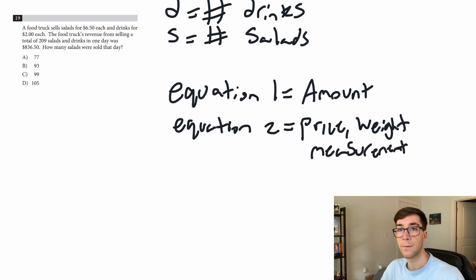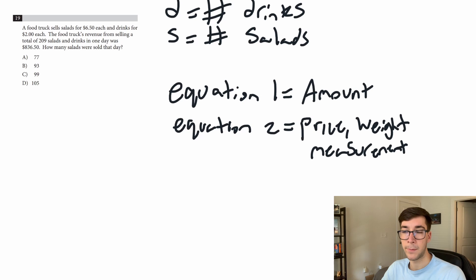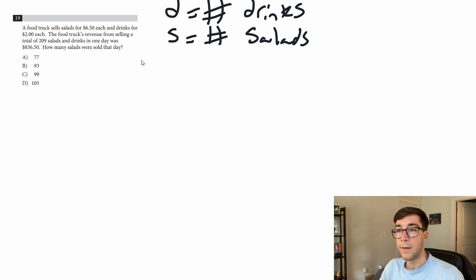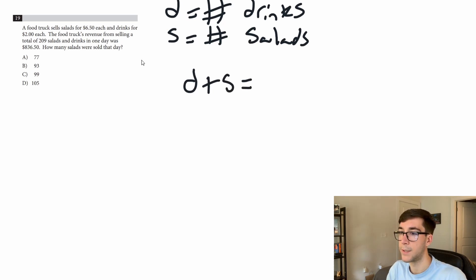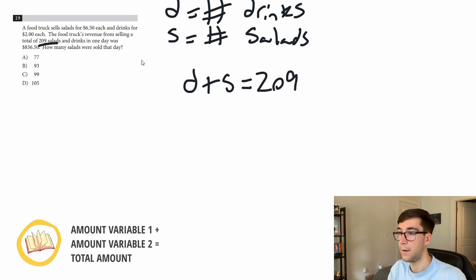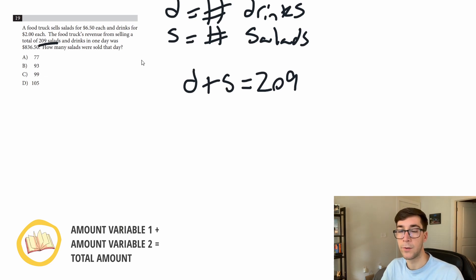When you see word problems: first identify the variables, then remember the types of equations you need — an amount equation and a measurement equation. Let's start with the amount equation. How many drinks and salads do we have in total? The problem says a total of 209 salads and drinks, so d plus s equals 209. That's the amount equation.